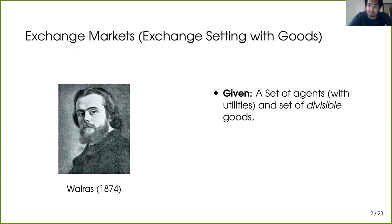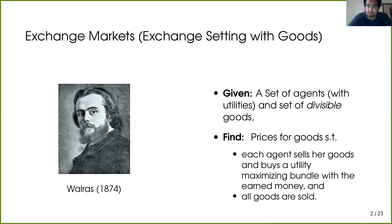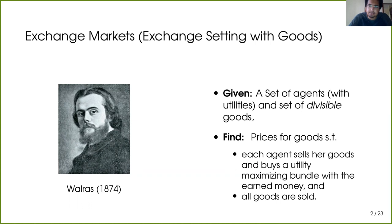Given a set of agents and divisible goods, our goal is to find the so-called competitive equilibrium — that is, prices for the goods such that each agent sells her owned goods, earns some money, and uses that money to buy a bundle that maximizes her utility. What makes competitive equilibrium prices special is that while each agent maximizes her own utility, all the goods are sold: demand equals supply. These are therefore also called market clearing prices.